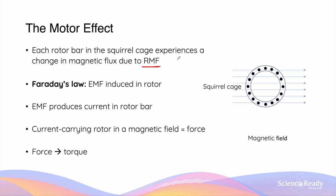According to Faraday's law, this change in flux will cause an EMF to be induced in the rotor — that is, the squirrel cage — and the EMF will produce current in each of the rotor bars. When we have a current-carrying conductor, that is a rotor bar, inside a magnetic field, there will be a force produced on each of the bars, and these forces together produce torque, allowing the squirrel cage to rotate.